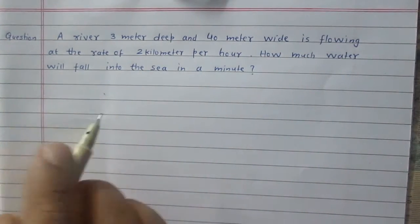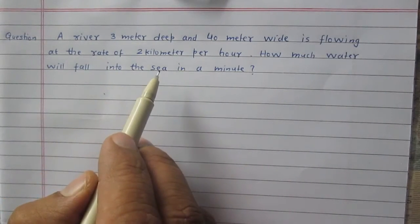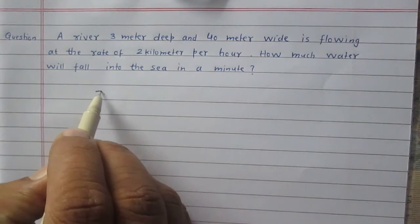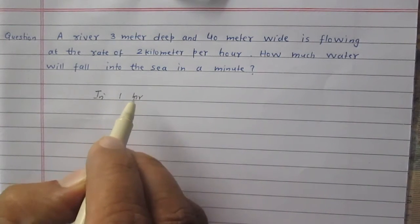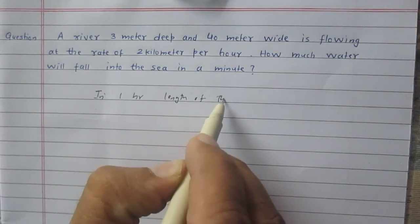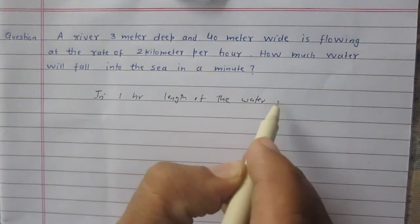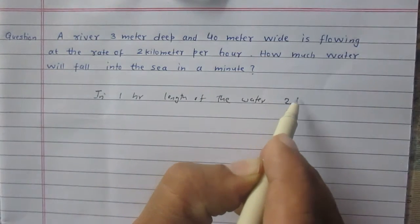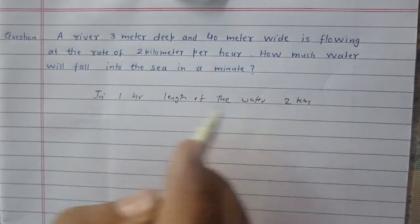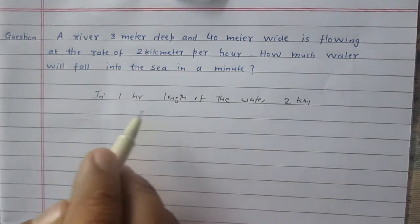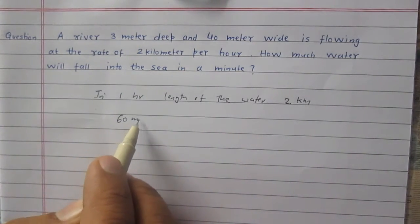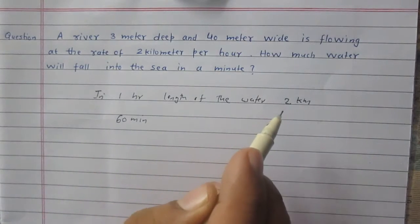First, we will consider the rate of flow of the river. The river is flowing at 2 km per hour, meaning in one hour the length of the water is 2 km. We know that in one hour there are 60 minutes, so in 60 minutes the length of the water is 2 km.